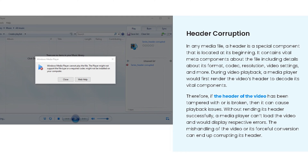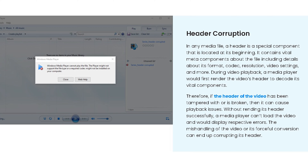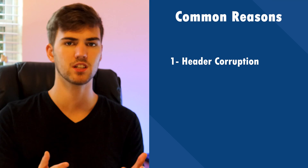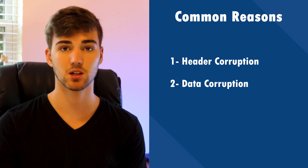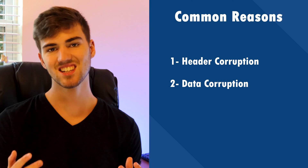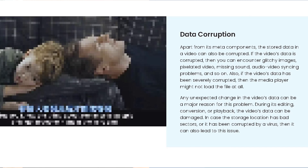However, when the header is corrupted, it may restrict you from playing videos smoothly. Reason two — data corruption. In addition to the header information, the data of the actual video can be damaged as well. And if that's the case, you'll see flickering, glitchy, and laggy visuals on your screen. The video data may get corrupted by external sources such as viruses and malware.